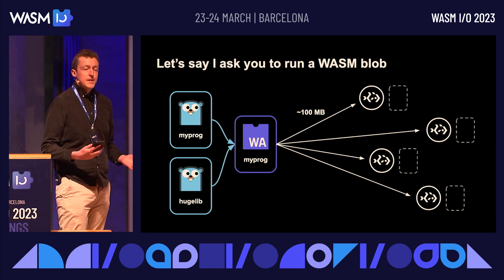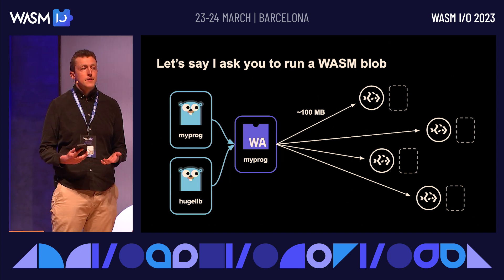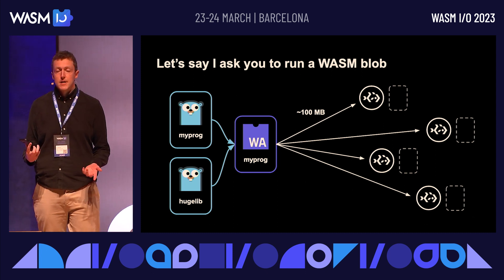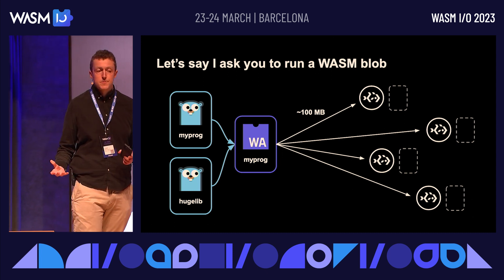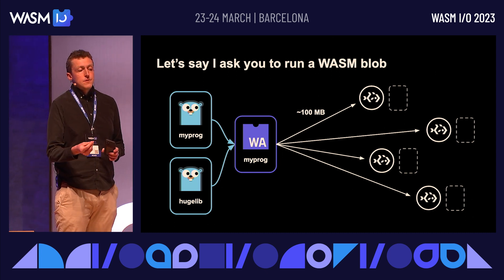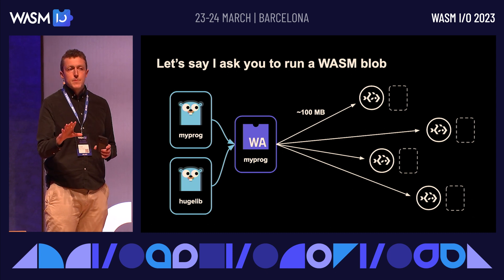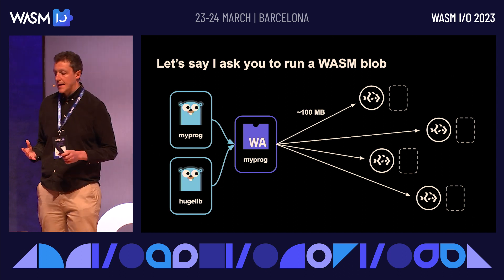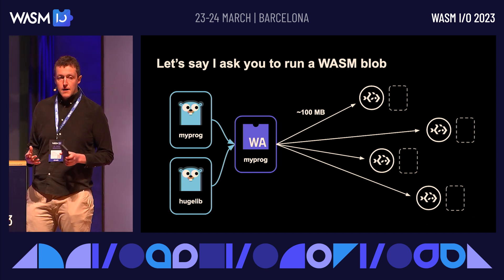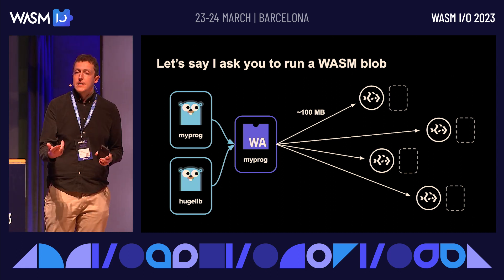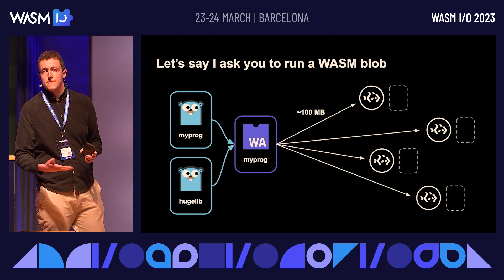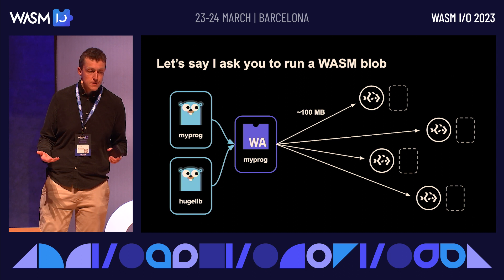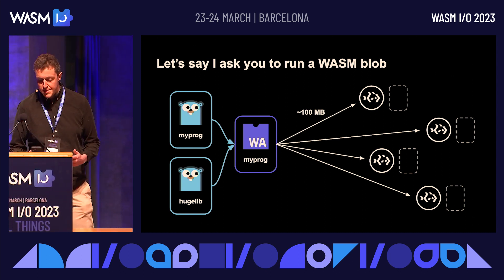However, in the sorts of places we're talking about, bandwidth is really important. And if you're running on a Raspberry Pi, something that's 100 megabytes might take up the entire memory or most of the disk space. If you want to run this job and then a similar but slightly different job, that's a whole new blob you've got to send again. The bandwidth and memory limitations here are significant. And if you're running against 500 or 5,000 nodes, suddenly you basically need a CDN for that.